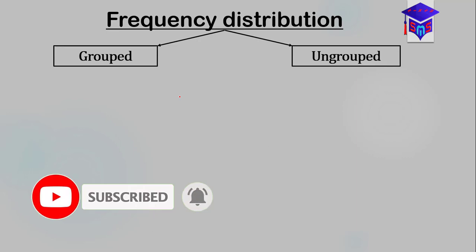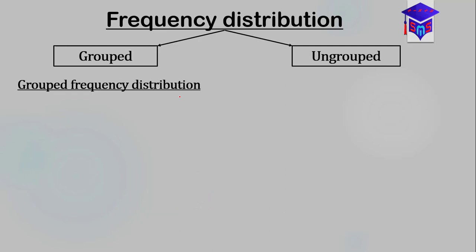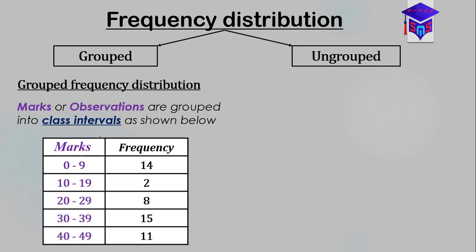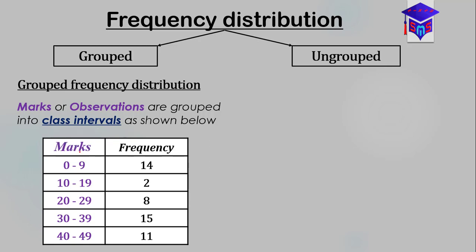When we talk about grouped frequency distribution, the marks or observations are grouped into class intervals. This can apply to any observation — it can be ages, scores, or heights — but for the purpose of this lesson we're going to use marks. So the marks are grouped into class intervals.